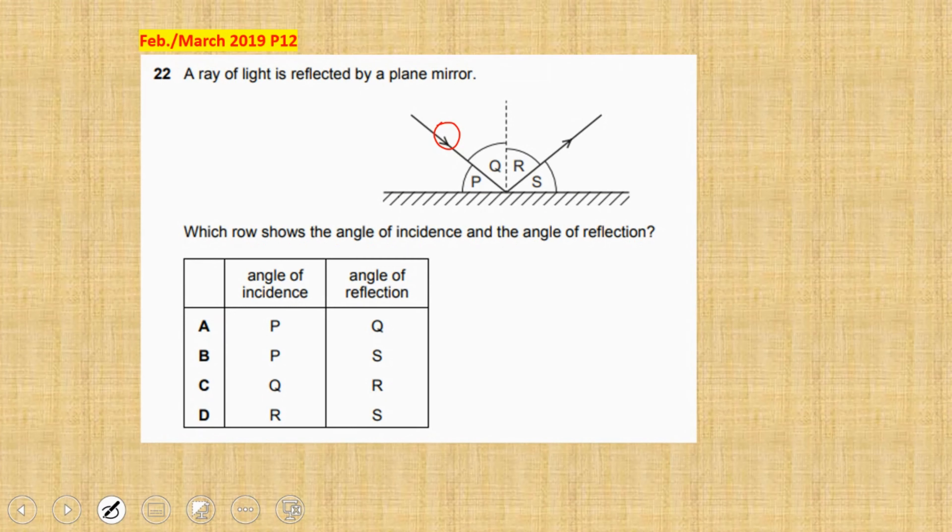The ray of light strikes the mirror at the incident point here. This one is the incident. The normal, which is the dotted line, makes 90 degrees with the reflective surface, so it's perpendicular to the reflective surface. And the angle between the incident light ray and the normal is going to be the angle of incidence.